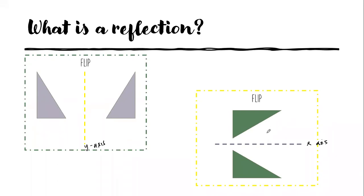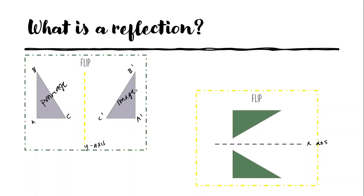If I labeled one triangle A, B, C and the reflected one C prime, B prime, A prime — what's the original one called? Pre-image, awesome! This is called the pre-image because it's what you started with before doing anything. The reflected version is called the image. Your image will have prime notation — those little apostrophes. That's a quick review from last class.